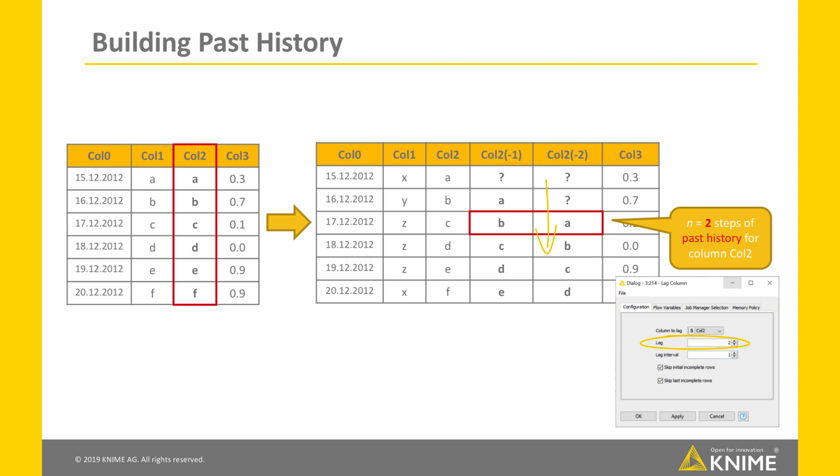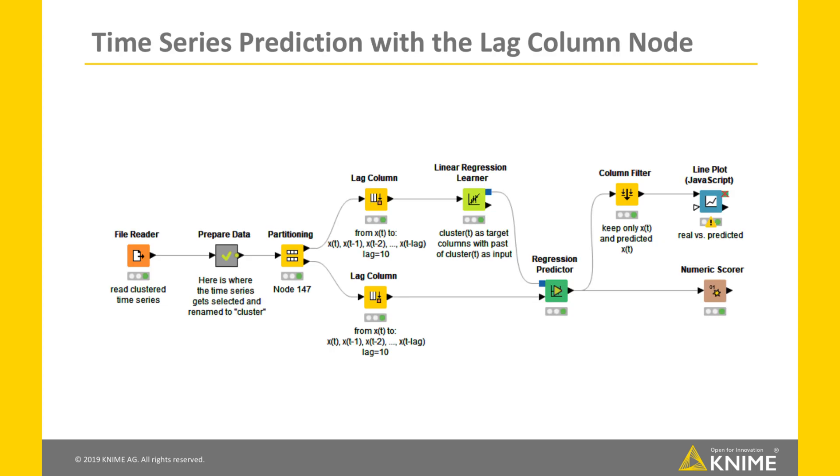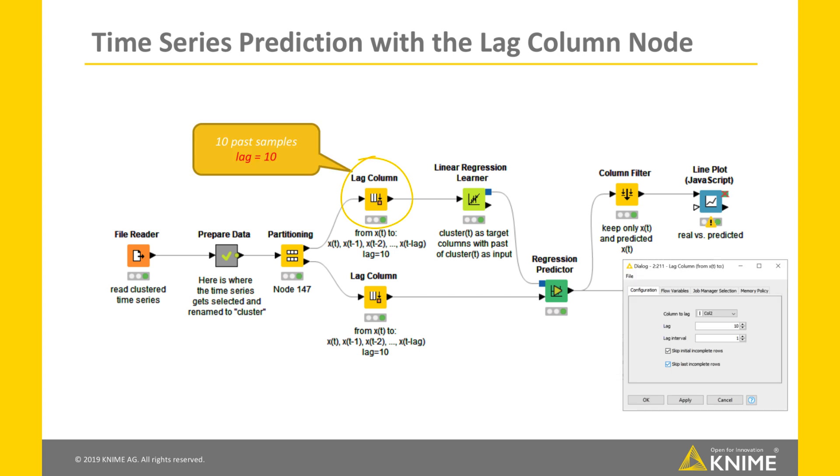This past history is what we need to train a machine learning model for time series prediction. Here is a classic workflow to train a machine learning model to perform time series prediction. In this case, we use the Lag Column node to build the vectors of past N values for Column Col2. These vectors are then used to train a machine learning model to predict the current value of Column Col2 given its past N values.